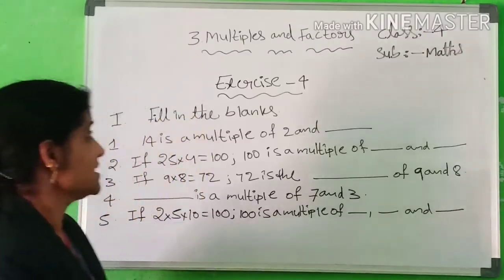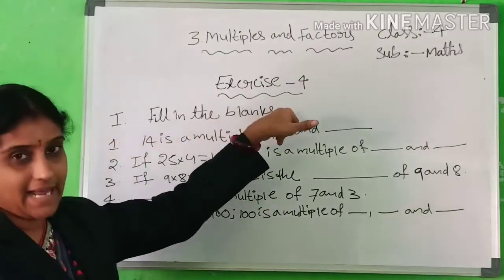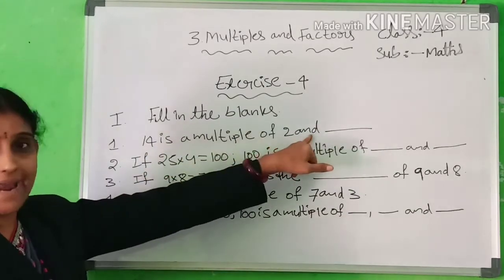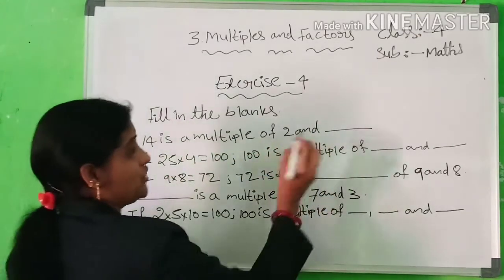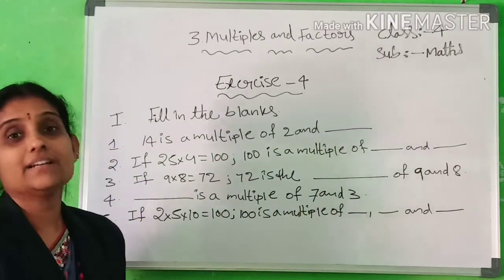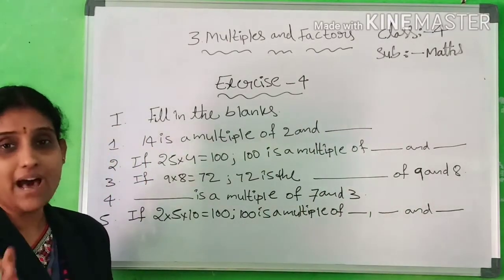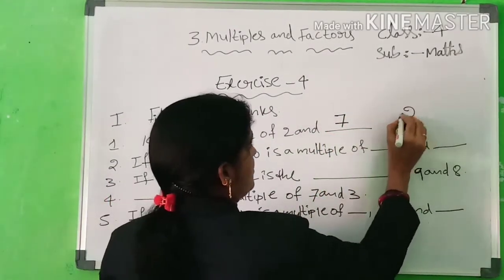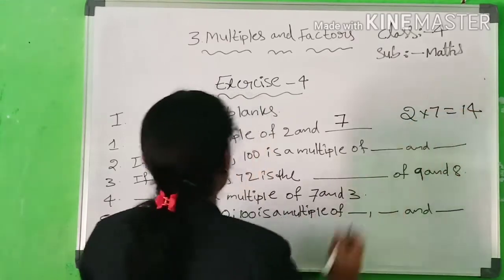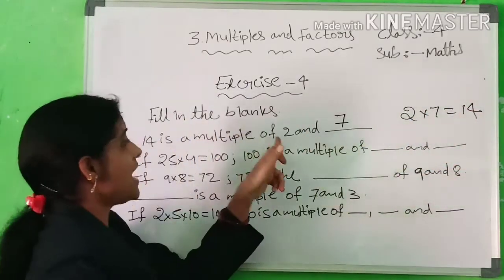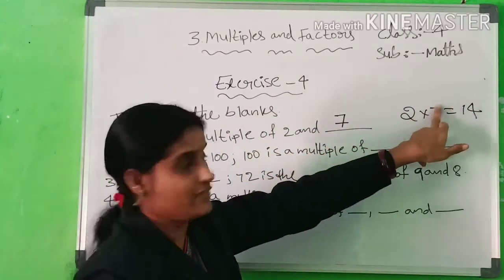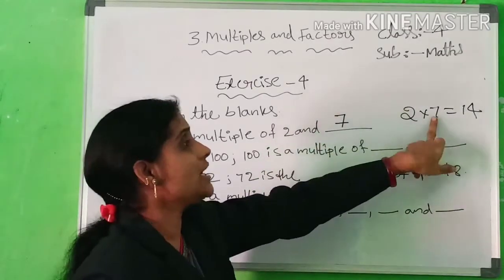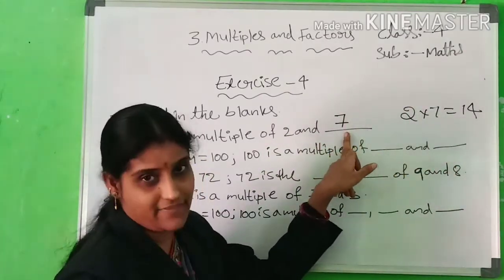Now, exercise 4. Fill in the blanks. First one: 14 is a multiple of 2 and 7. In the 2 times table, 2×7=14, so the answer is 7. Here, 2 is given and you have to write 7.